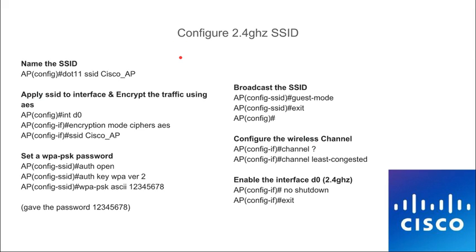My default gateway is 192.168.1.1, so that's what I typed in — yours could be different. Once we've configured the interface, we need to name the network. Type 'dot11 ssid' followed by the network name. This is the name we're going to use for the 2.4 GHz frequency. To associate this name with 2.4 GHz, go into the interface — D0 is the 2.4 GHz frequency. Then encrypt the traffic with the appropriate encryption type and apply the name to the interface.